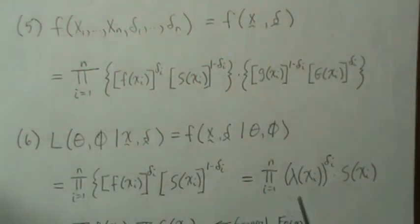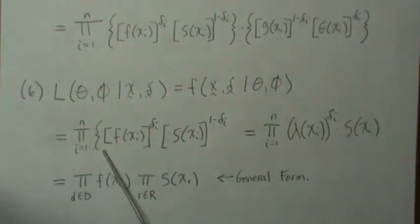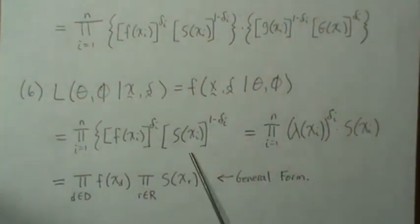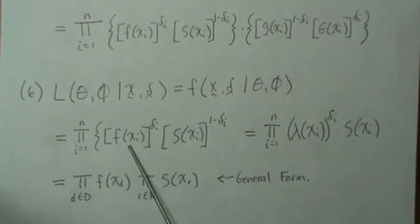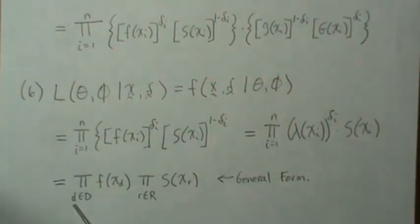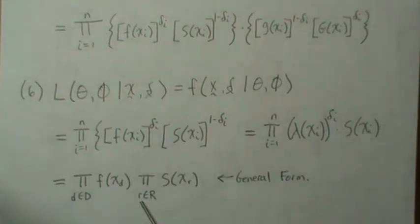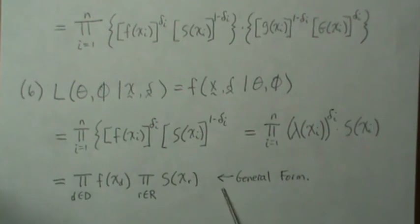Now, if you like the expression in terms of the hazard function, you can do this. The general form for this likelihood is: take the product of the density over all the observed failures or deaths. Let D be an observed death or failure — take the product. And let R be right-censored observations — take the product of the survival function. So this is the general form for the likelihood of right-censored data.